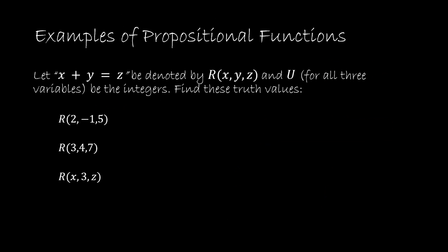So let's take a look at an example here. And I have a propositional function R(x,y,z). R is the predicate and that represents this relationship x plus y equals z. x, y, z are the variables and U the universe is the domain and the domain for all three variables is going to be the integers in this case.